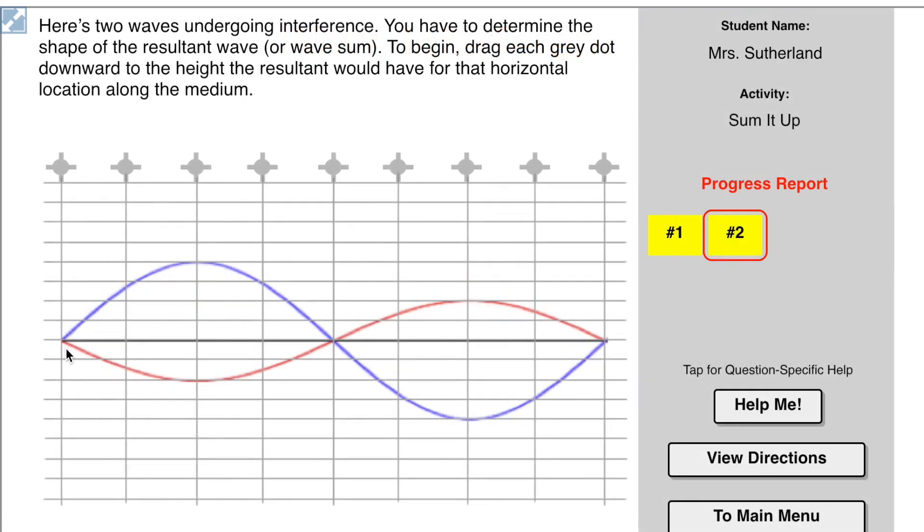Okay. So we have two waves undergoing interference. You have to determine the shape of the resultant wave or the wave sum. To begin, drag each gray dot downward to the height the resultant would have for that horizontal location along the medium. That's a mouthful.